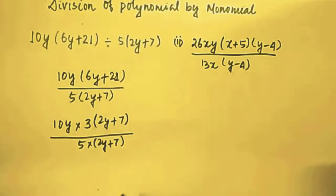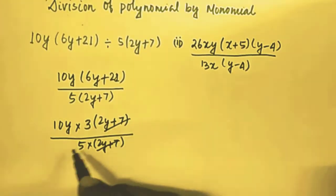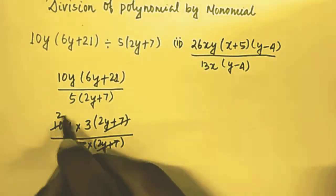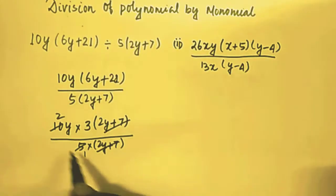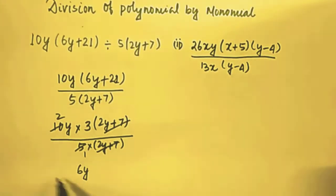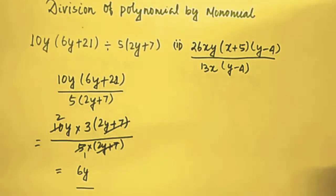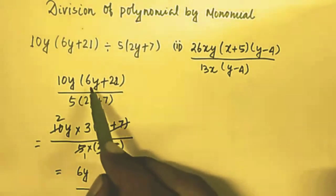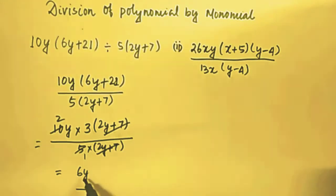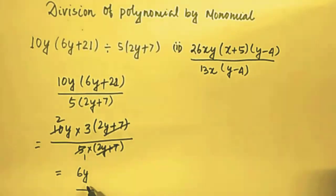Now we can cancel out (2y + 7) and (2y + 7), and similarly 5 cancels with the 5 from 10y. So we get 2 multiplied by 3, which gives 6y as the answer. Just take 3 common out from (6y + 21) and we get 2y × 3, so this is 6y.